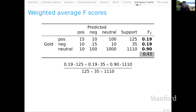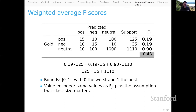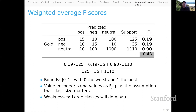Weighted average F scores give a very different perspective. We take an average of the F1 scores weighted by the amount of support for each class. The value encoded adds the assumption that class size really does matter. The fundamental weakness is that large classes will dominate — just as with accuracy — which can lead to small classes being irrelevant to the evaluation metric. That could reflect your values if you care about raw rate of correct predictions, but for many NLP contexts we really care about progress on the small but nonetheless important classes, so weighted averaging is probably not the right choice there.